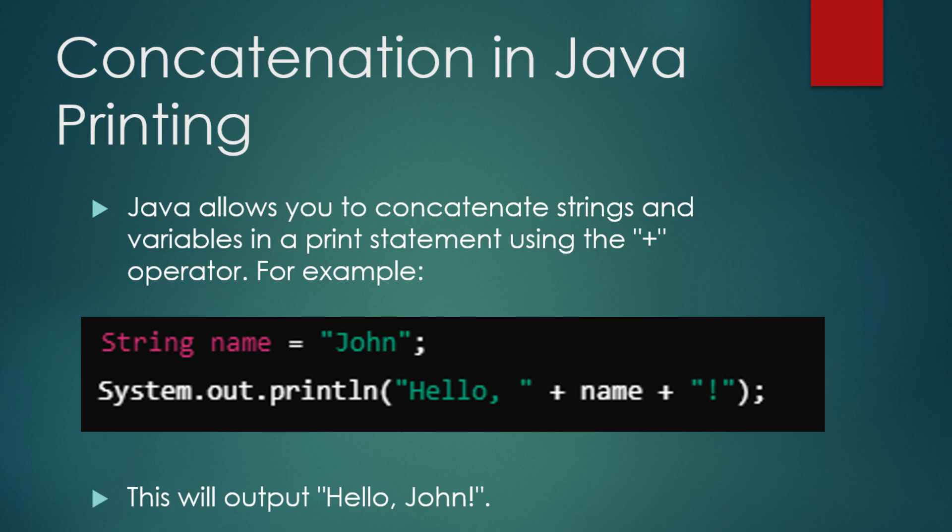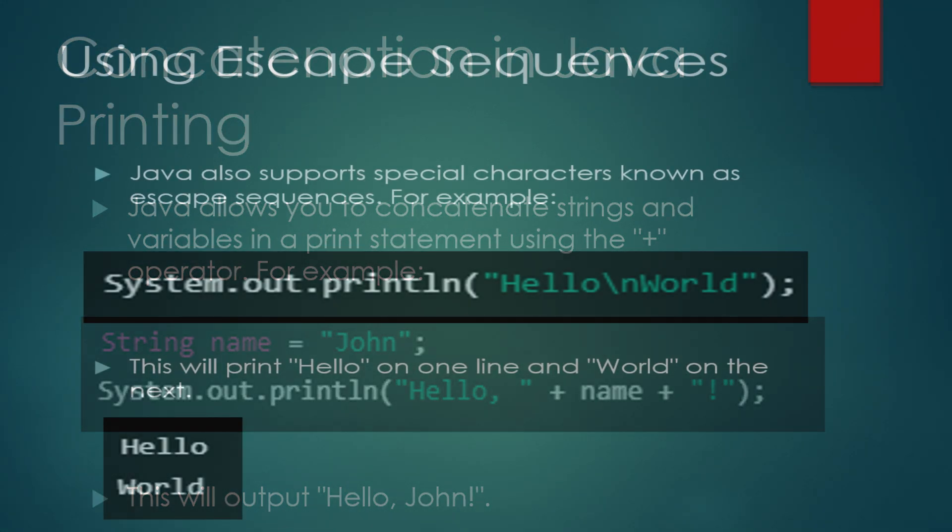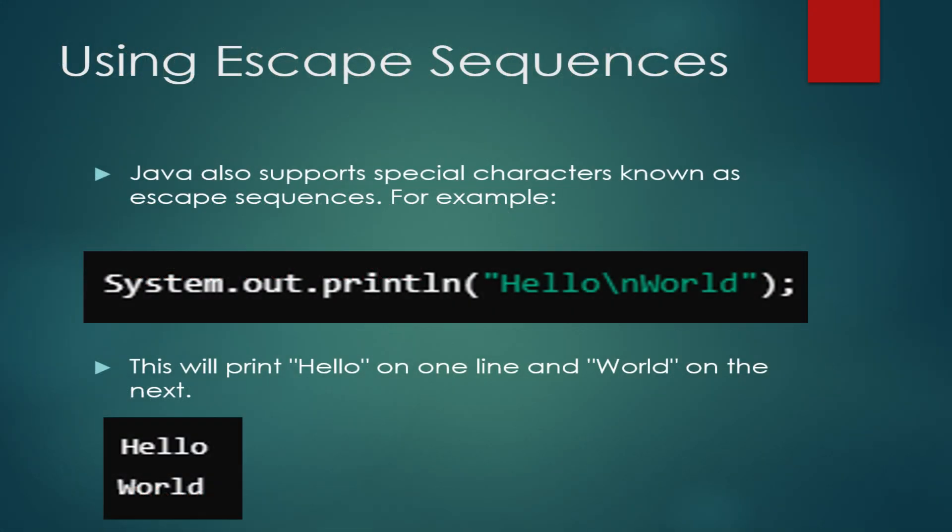This kind of concatenation makes it easy to construct dynamic output messages. In addition to printing variables and text, Java also supports special characters known as escape sequences. These are used when you want to include characters that have special meanings, such as new lines or tabs, in your output. For example, if you want to print two lines of text, you can use the \n escape sequence which represents a new line: System.out.println("Hello\nWorld"). This will output Hello on one line and World on the next. Escape sequences are handy when you need to format output across multiple lines or include special characters like tabs or quotation marks.